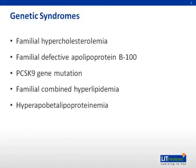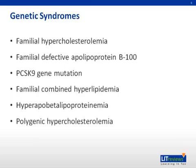Hyperapobeta lipoproteinemia is a disorder in which there's overproduction of APOB. In polygenic hypercholesterolemia, there are multiple abnormalities in LDL metabolism, leading to elevated total cholesterol. Finally, the small, dense LDL disorder is associated with increased triglycerides and APOB.